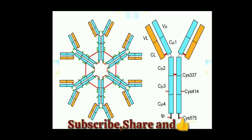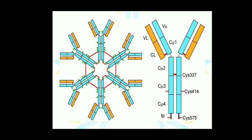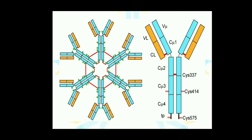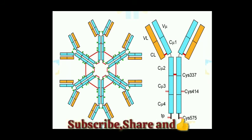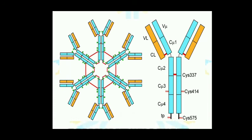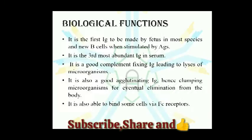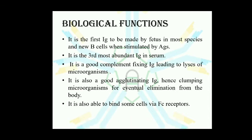Looking at the structure of IgM antibodies in this figure, you can observe there are four different constant regions within the mu chain: Cμ1, Cμ2, Cμ3, and Cμ4. The J-chain joins at the Cμ4 domain and is responsible for bonding all the monomers of IgM antibodies with each other.